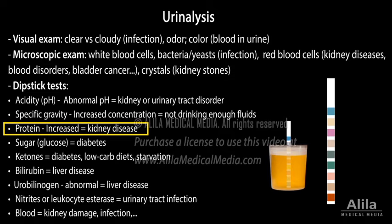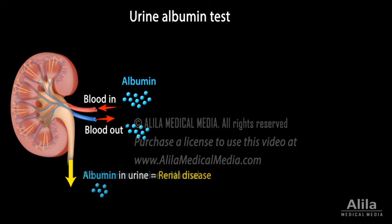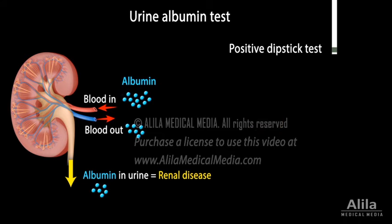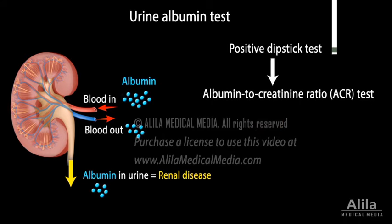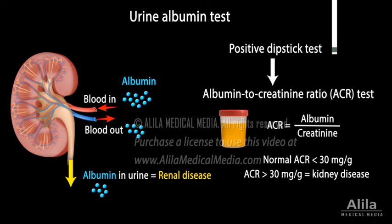For kidney function, albumin is tested. Albumin is a blood protein that is not normally passed into urine; presence of albumin in urine is a sign of renal disease. Urine albumin tests can be done as part of urinalysis or as a separate dipstick test. A positive dipstick test is usually followed by an albumin to creatinine ratio test, which provides quantitative measurement of urine albumin by comparing it to the amount of creatinine in the urine sample.